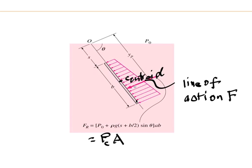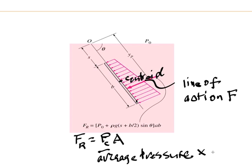We'll come back to this a little bit later. But for now, I just want you to know that the resultant force always can be taken by the average pressure times the area of the plate. In this case it will be B times A.